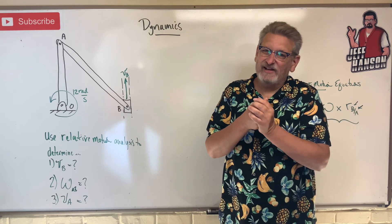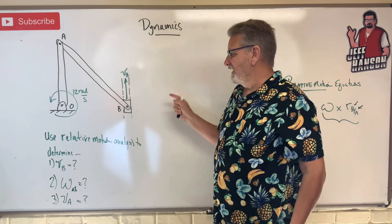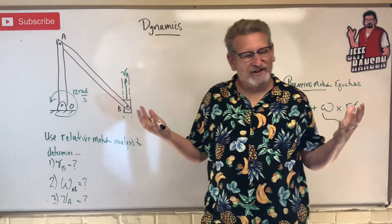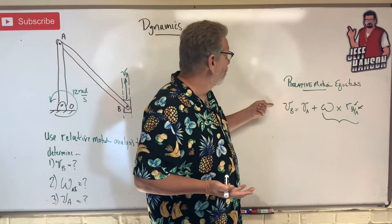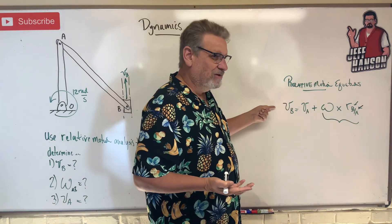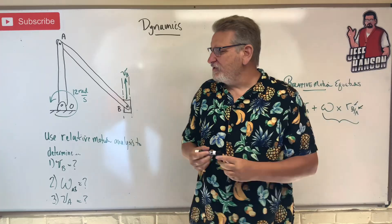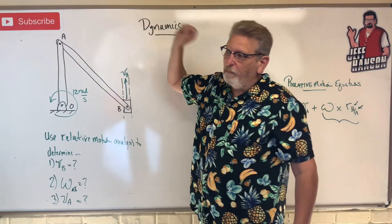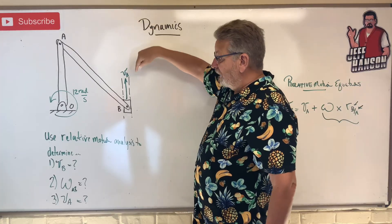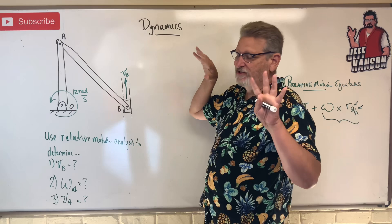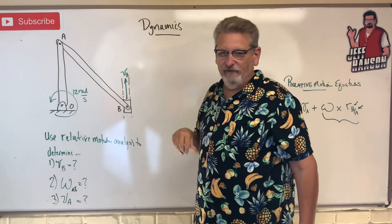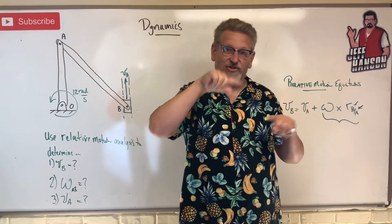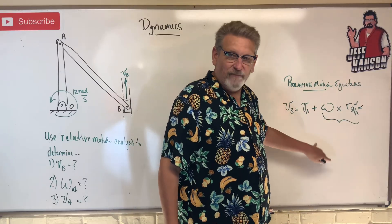Welcome back. As promised, we have another relative motion problem, a little bit harder this time — we've got a linkage. What does this relative motion thing mean anyway? This is the equation we talked about last time. Relative motion just means that if one part of the system moves and it's hooked to the other part, the other part has to move in some relationship. That depends on which direction it's moving, the velocity direction, and which way things are rotating.